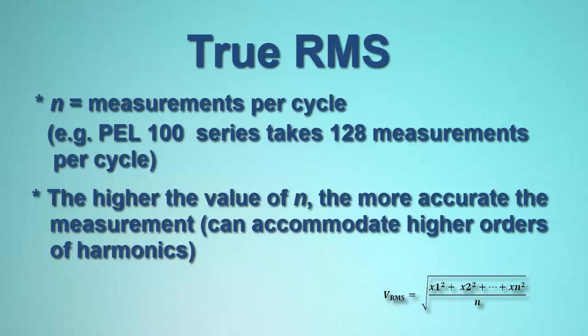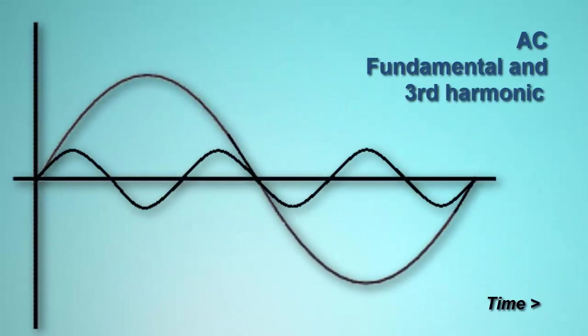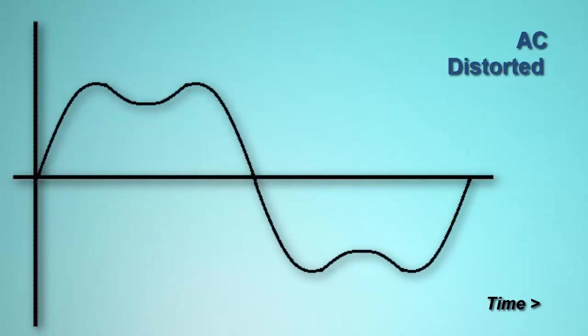To understand why this is so, let's consider the following example. Suppose we added a third harmonic wave to our fundamental wave, as shown on the screen. The combination of these two waves produces the distorted waveform shown here. As you can see, the greatest distortion to the fundamental occurs when the third harmonic reaches either its positive or negative peak. By definition, this occurs six times per cycle of the fundamental. Therefore, to accommodate the effect of the third harmonic, we will take six measurements, timed to correspond with the positive and negative peaks of the third harmonic.